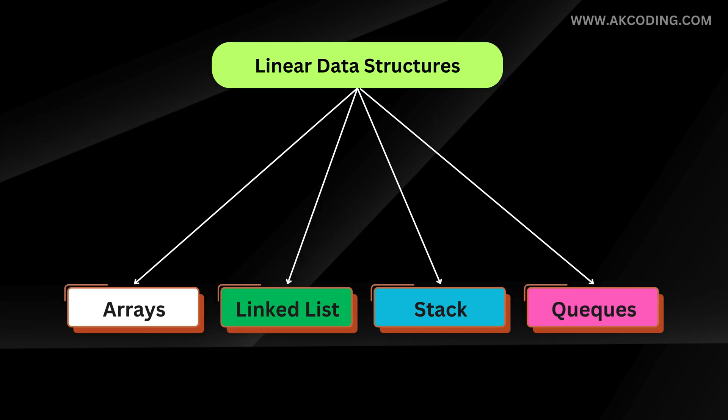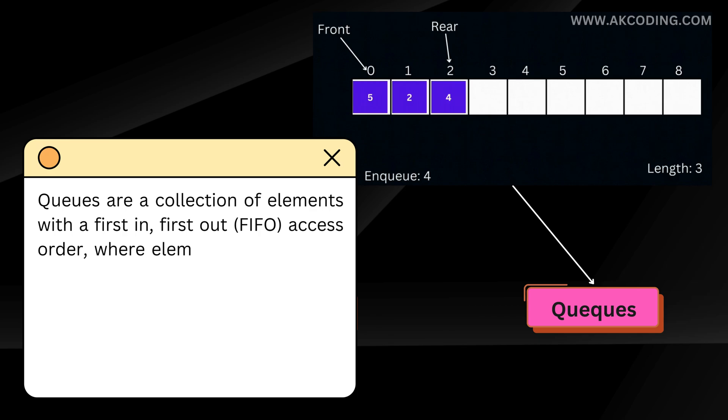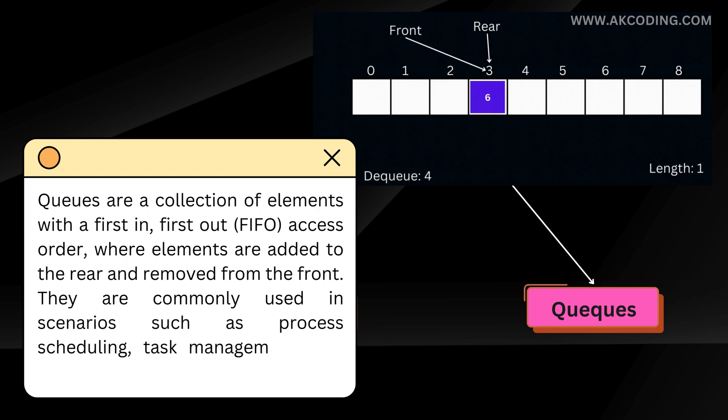Queues are collections of elements with a first-in-first-out access order where elements are added to the rear and removed from the front. They are commonly used in scenarios such as process scheduling, task management, and event handling.